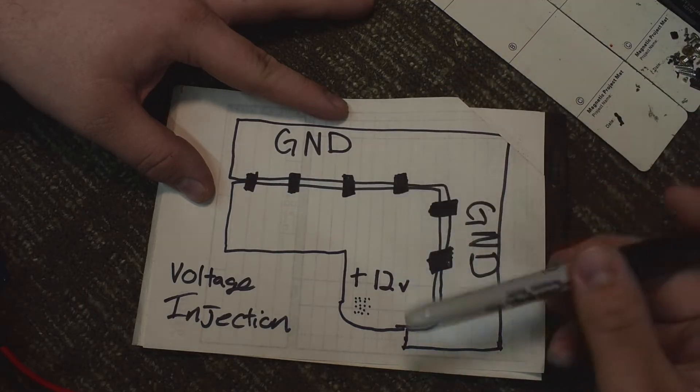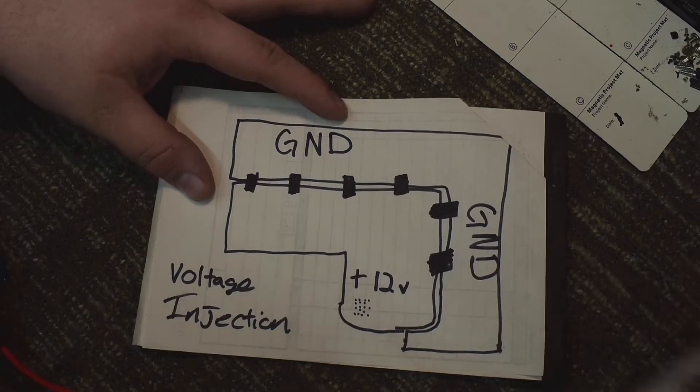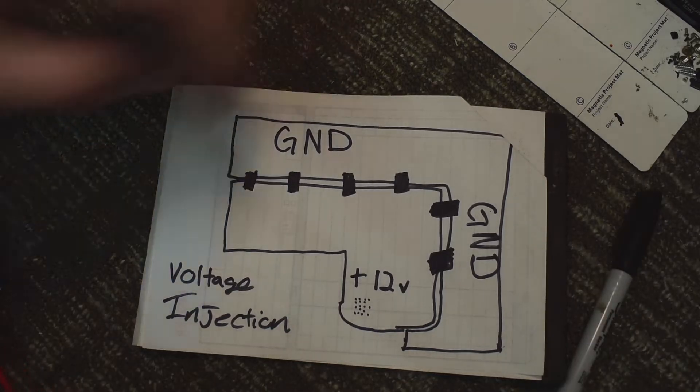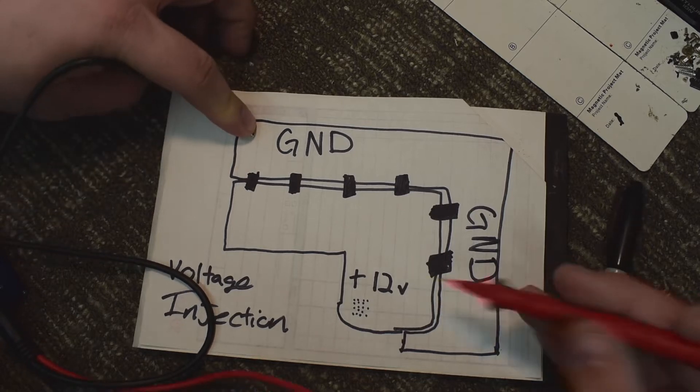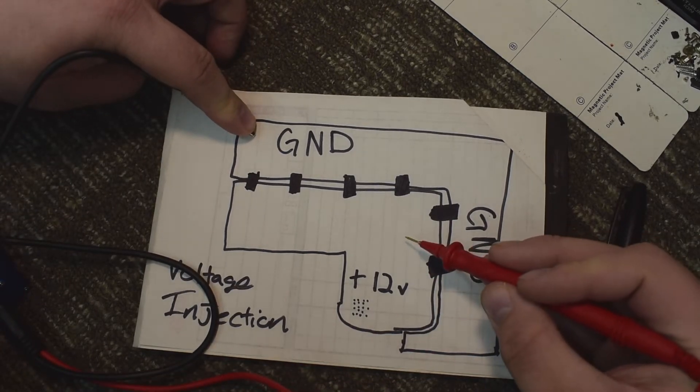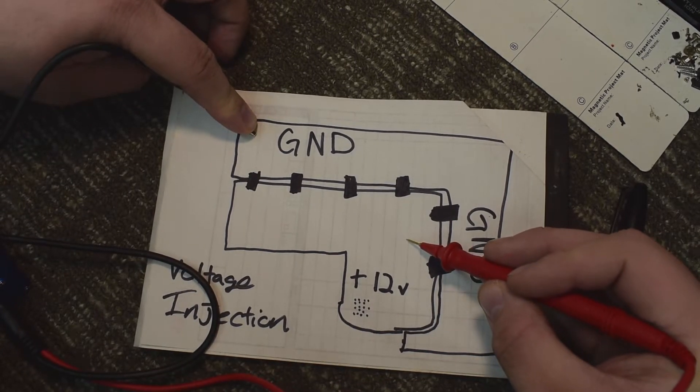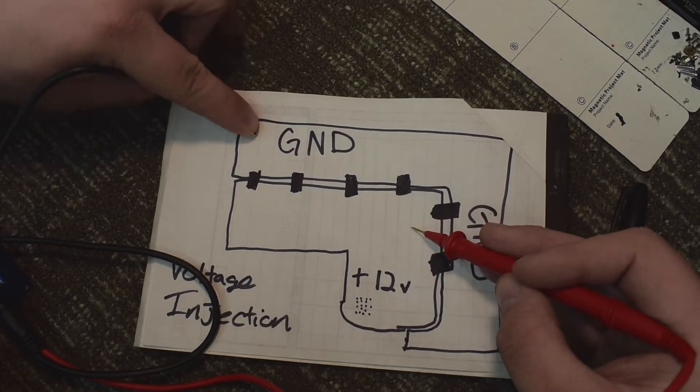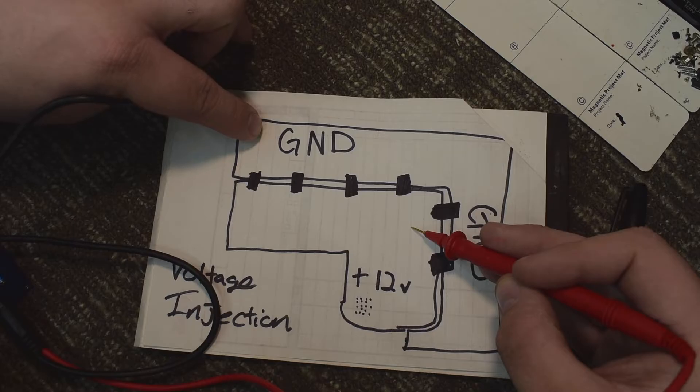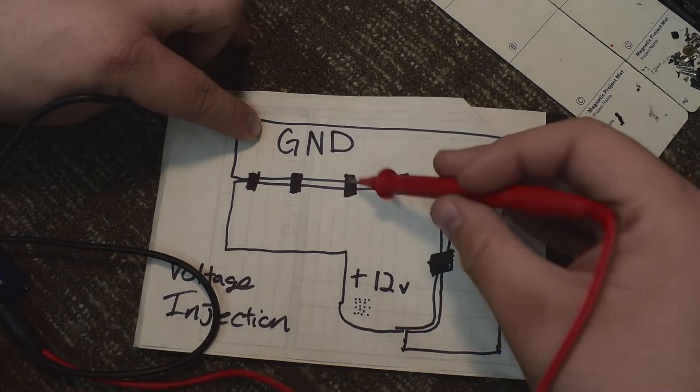Now, when you inject voltage, imagine you take your multimeter probes, put your black probe on the ground, and you put your red probe on the 12 volt rail, and there's continuity between ground and 12 volts. That means there is going to be a short somewhere, one of these capacitors has a short.